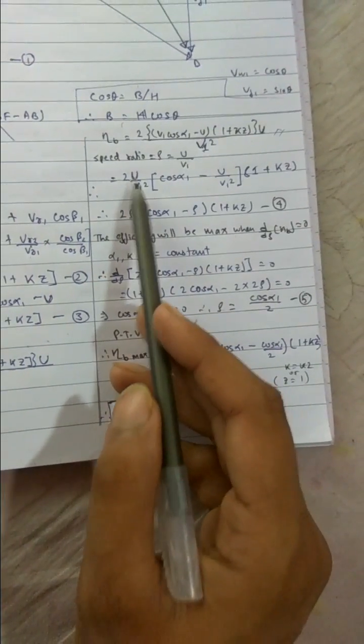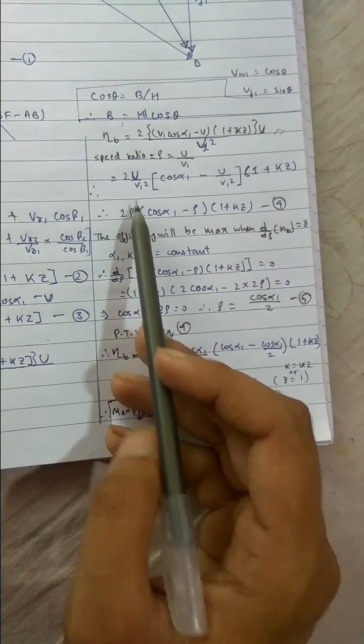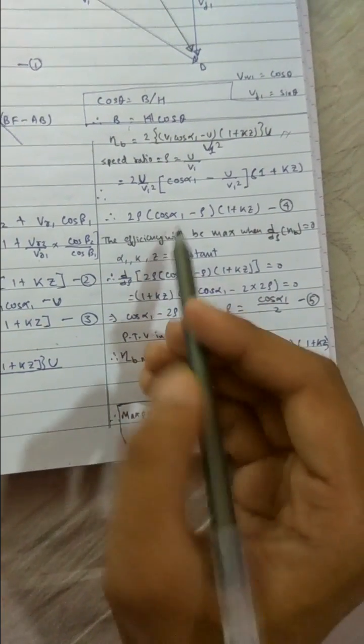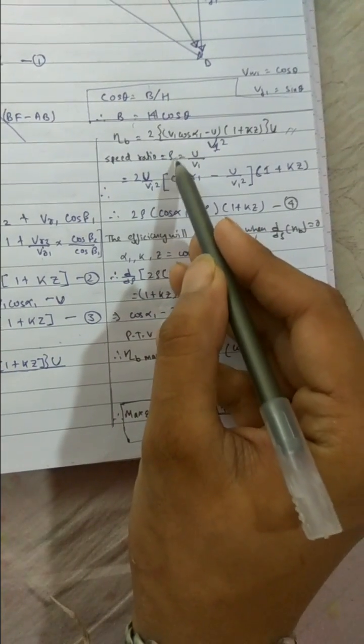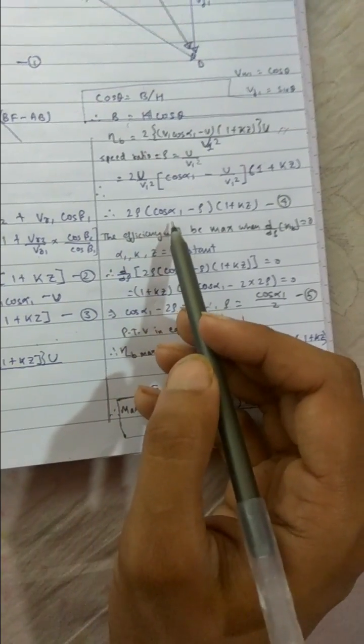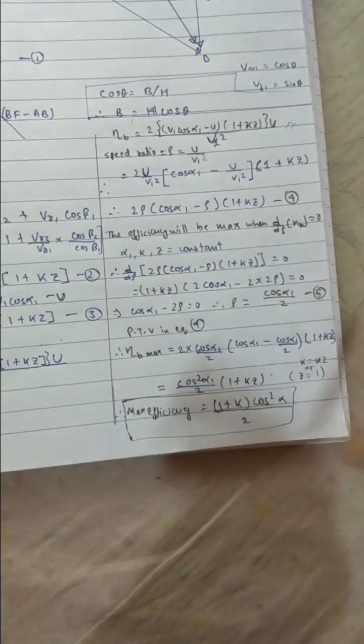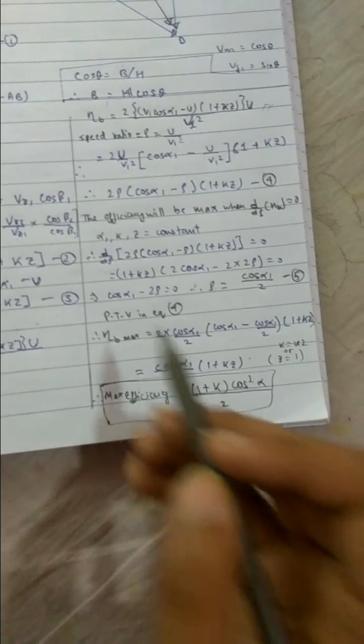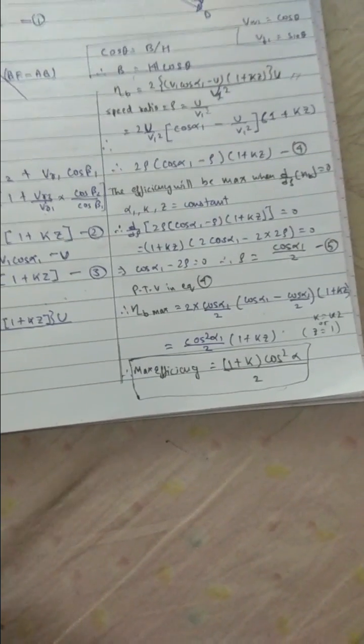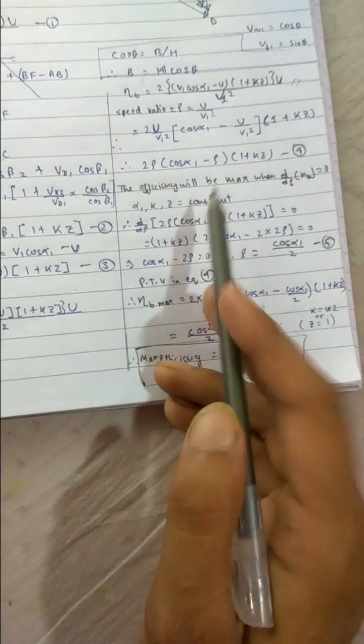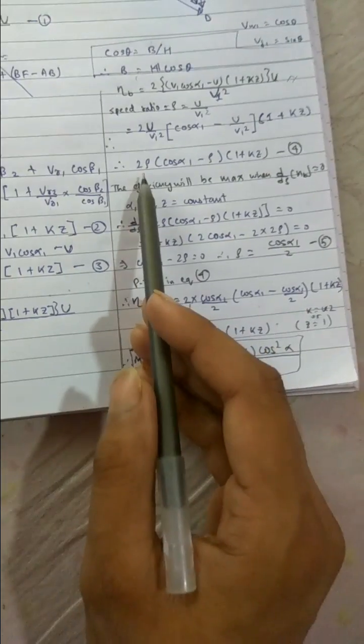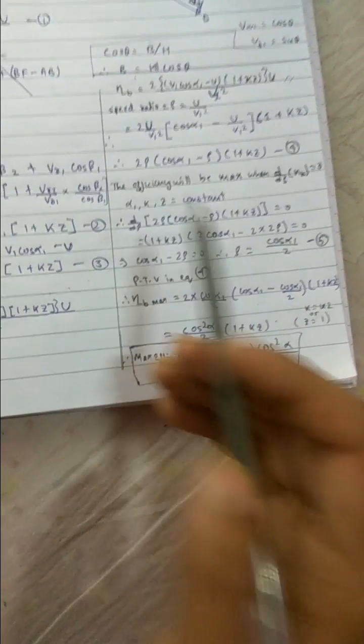Check it properly. So whichever place U by V1 is there, we wrote it as rho, or U by V1 square we wrote it as rho. So 2 rho cos alpha 1 minus rho 1 plus K Z. This is our new expression. So now from here, we have derived that we get it to a position where the efficiency depends now on rho, alpha, and K Z. Now K Z and alpha remaining constant, it solely depends on the rho, that is the speed ratio.